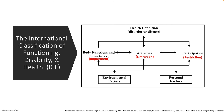Environmental factors are supports to improve function, or they could be barriers that cause further decline. For example, verbal cues that we might use to help slow rate during oral intake, or it could be caregivers who are feeding too rushed or too fast, which can cause impairments in swallow function. Personal factors are going to include demographic information, personality traits, and preferences.